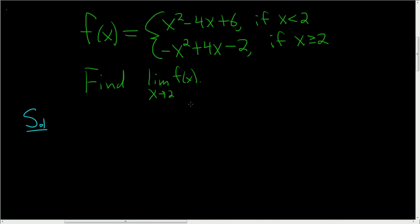So it's a piecewise function. For x less than 2, we're using this function, and for x greater than or equal to 2, f(x) is actually this function. So what we'll do is we'll take one-sided limits as x approaches 2. That way we can actually compute the limit.